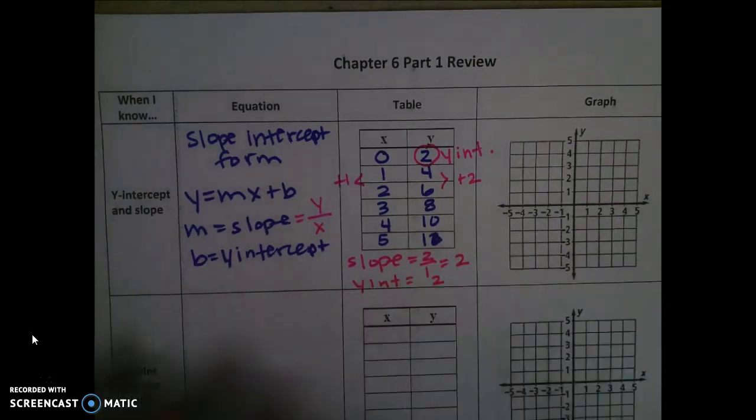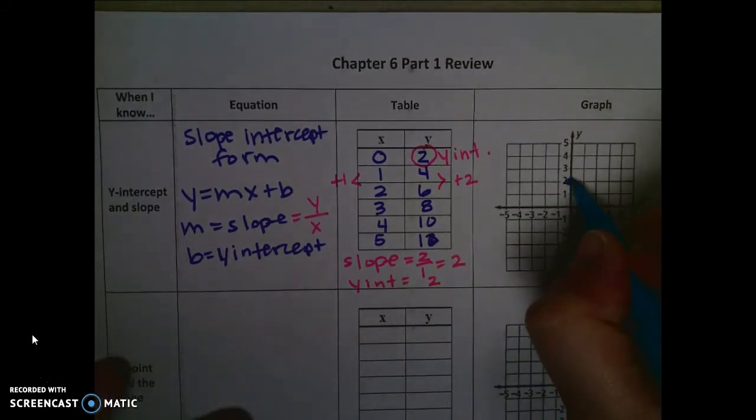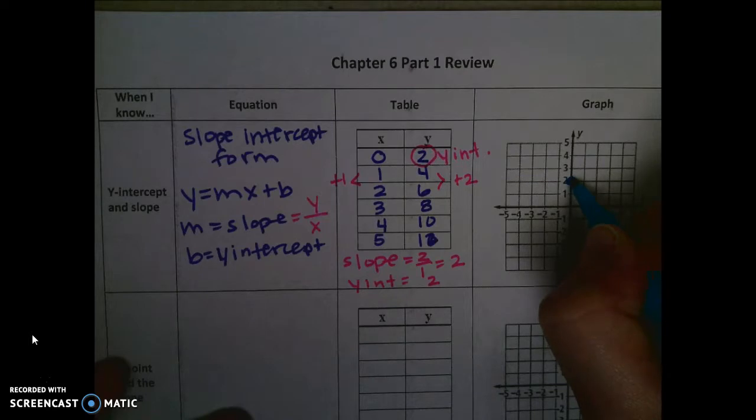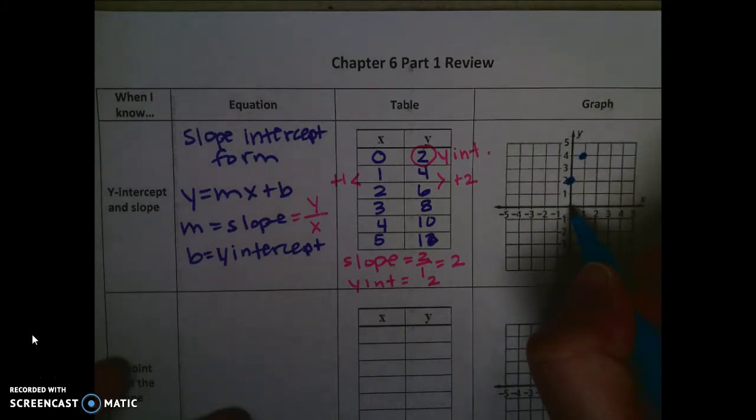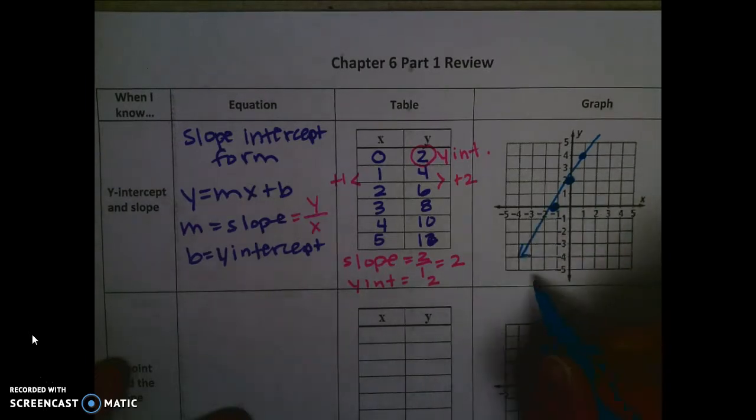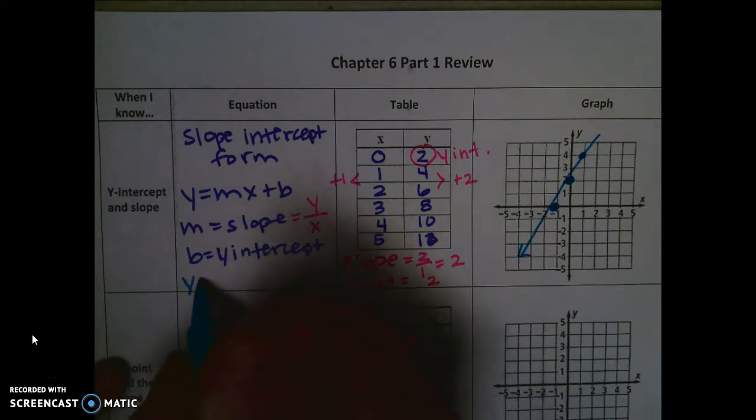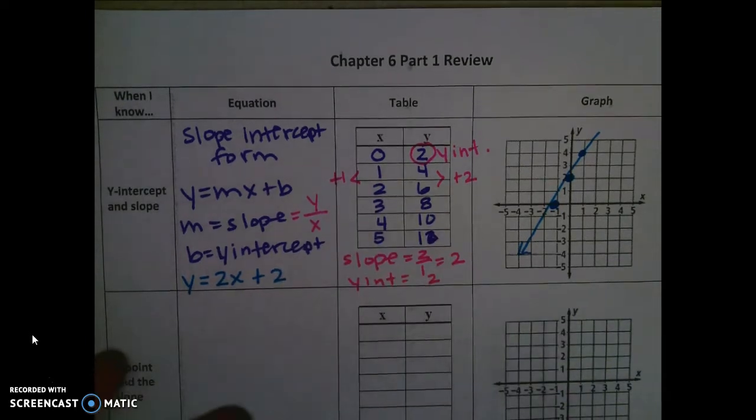So then when I graph that, I would start on the y-axis at 0, 2. And then I could use the slope to graph the next point. So I'm going to go up 2 and over 1. I can't go up another 2, but I could go back to make the point that came before the y-intercept. So that means I'm going to go down 2 and back 1, and then make your line. And then if I were to write the equation for this situation, since the slope is 2, I would say y equals 2x plus 2 because that's the y-intercept.